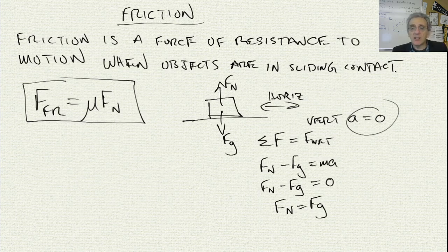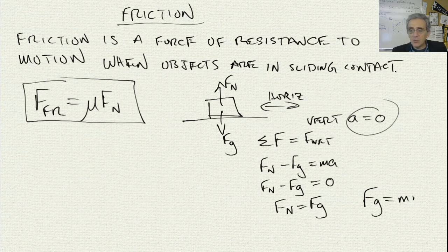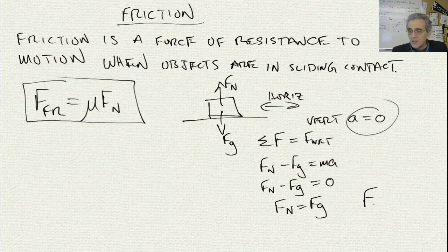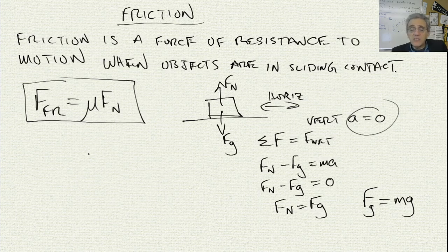The force that the ground pushes up on the object is the same as the force gravity pulls down. Since we know the force of gravity equals mass times the acceleration of gravity — and Fg is a subscript, not two things being multiplied — therefore when dealing with horizontal surfaces we can replace normal force with mg in this equation.